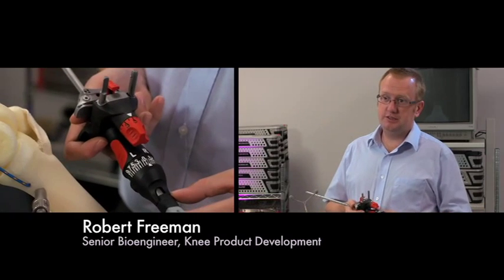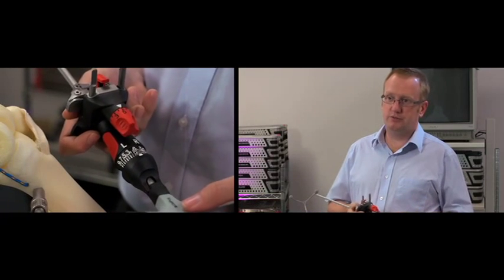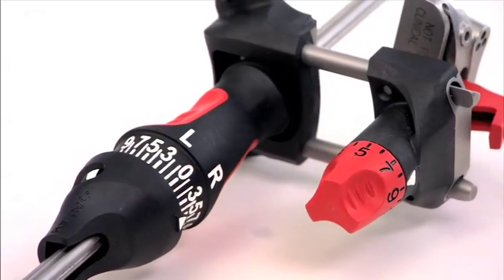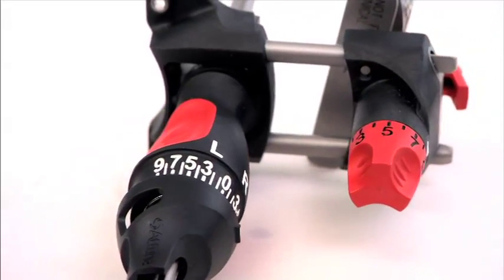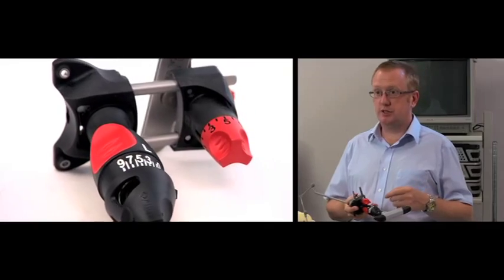With Attune, one of the key design inputs was to make the markings as obvious as possible. For the distal femoral jig, we've developed deboss marking with a contrasting colour.